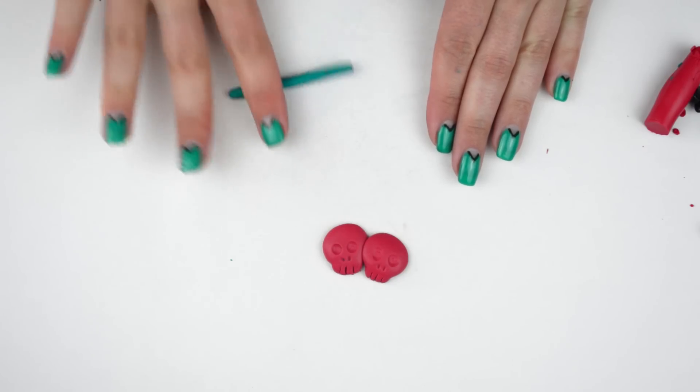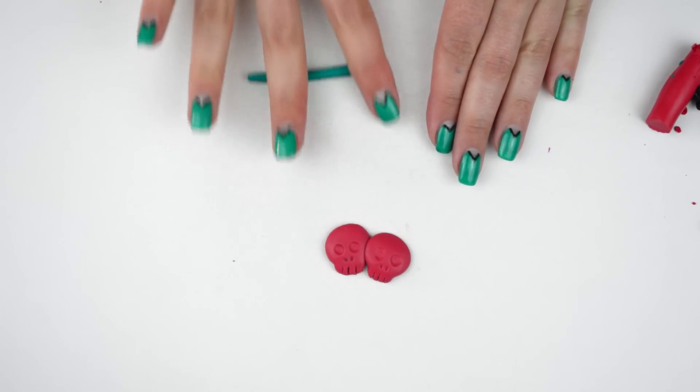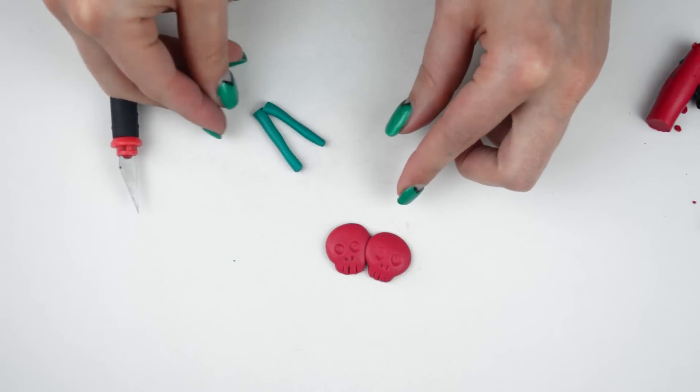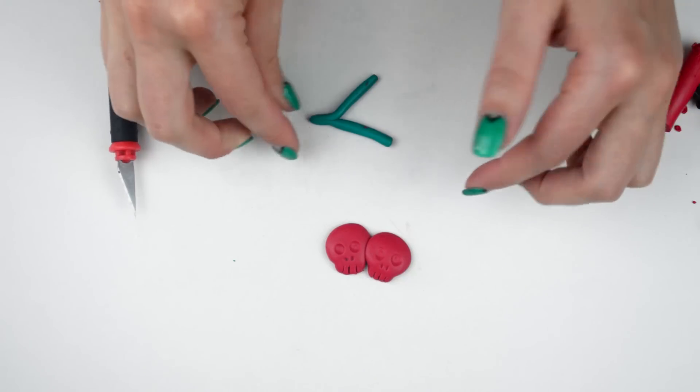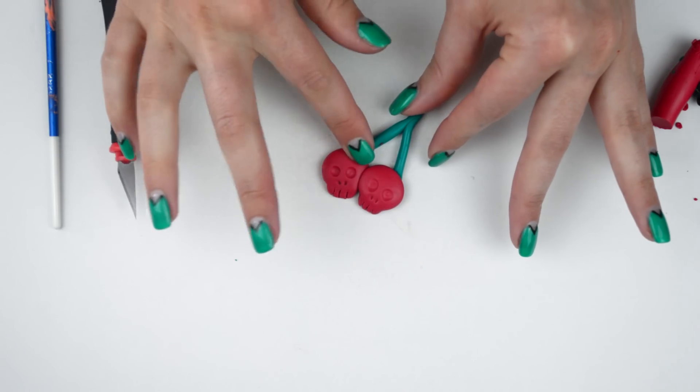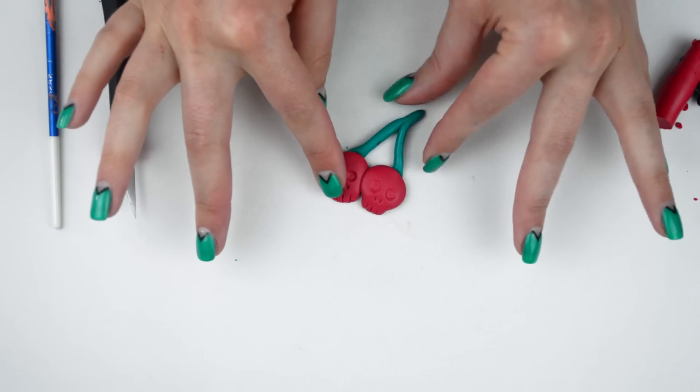The next step is the stem, which couldn't be easier. Just roll out a relatively thin snake, cut it in half, connect two ends together to make a V shape and the other two to the cherries.